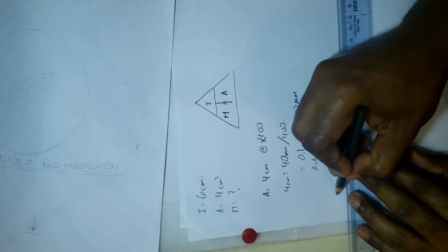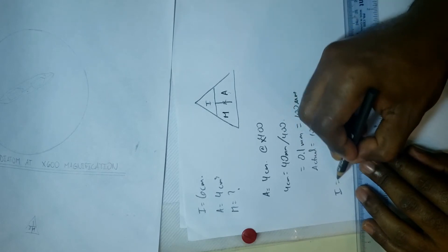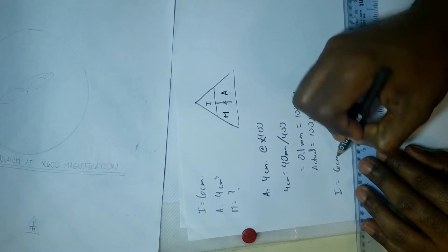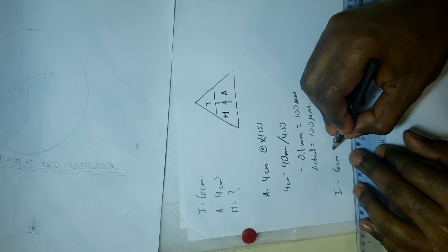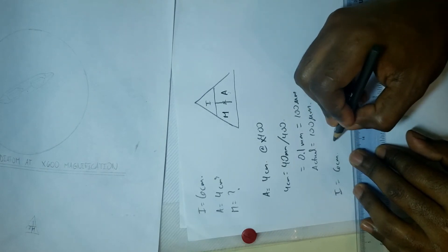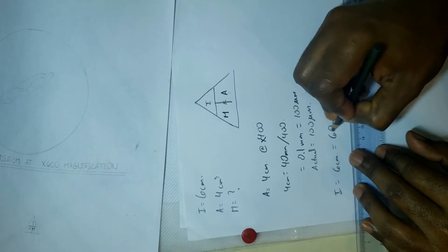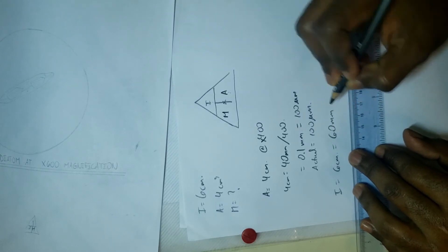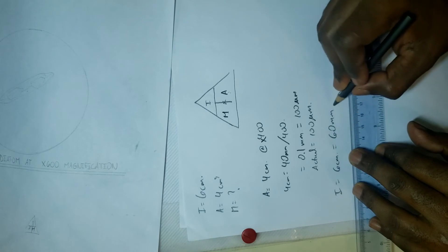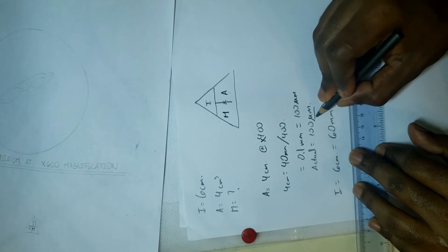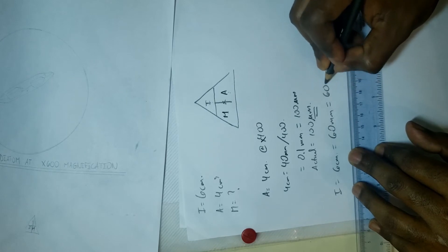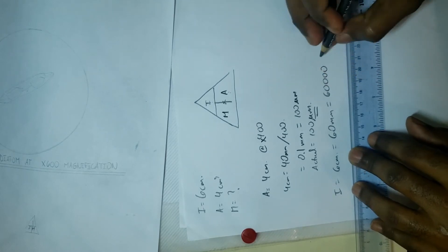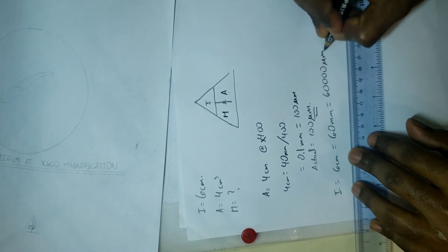Now the image is six centimeters. We convert that to millimeters—that is 60 millimeters. We can further convert that to micrometers, we want the units to match. So 60 millimeters is actually 60,000 micrometers.